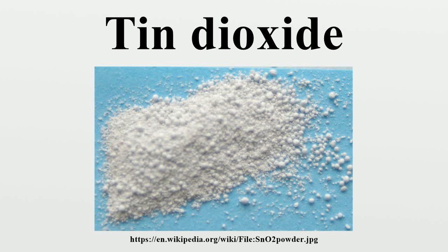This oxide of tin is the most important raw material in tin chemistry. This colorless, diamagnetic solid is amphoteric in structure. It crystallizes with the rutile structure, wherein the tin atoms are 6-coordinate and the oxygen atoms 3-coordinate. SnO₂ is usually regarded as an oxygen-deficient n-type semiconductor.